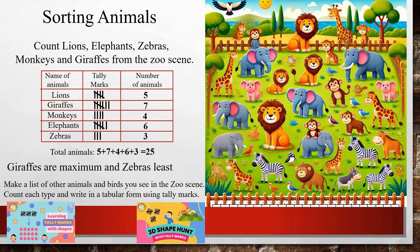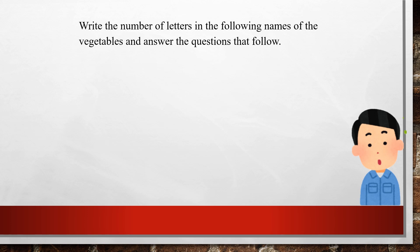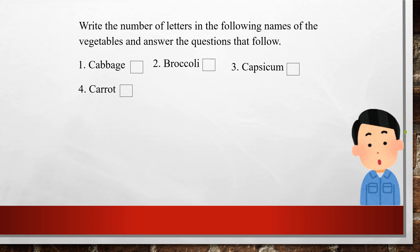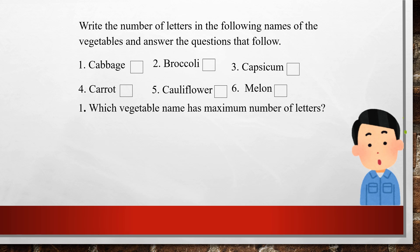This is a different type of question: write the number of letters in the following names of vegetables and answer the questions that follow. This is from the mathematics workbook — you can try to answer this yourself first. The first vegetable is cabbage — how many letters are in cabbage? There are 7 letters. Next are broccoli, capsicum, carrot, cauliflower, and melon — count the letters of each and write them.